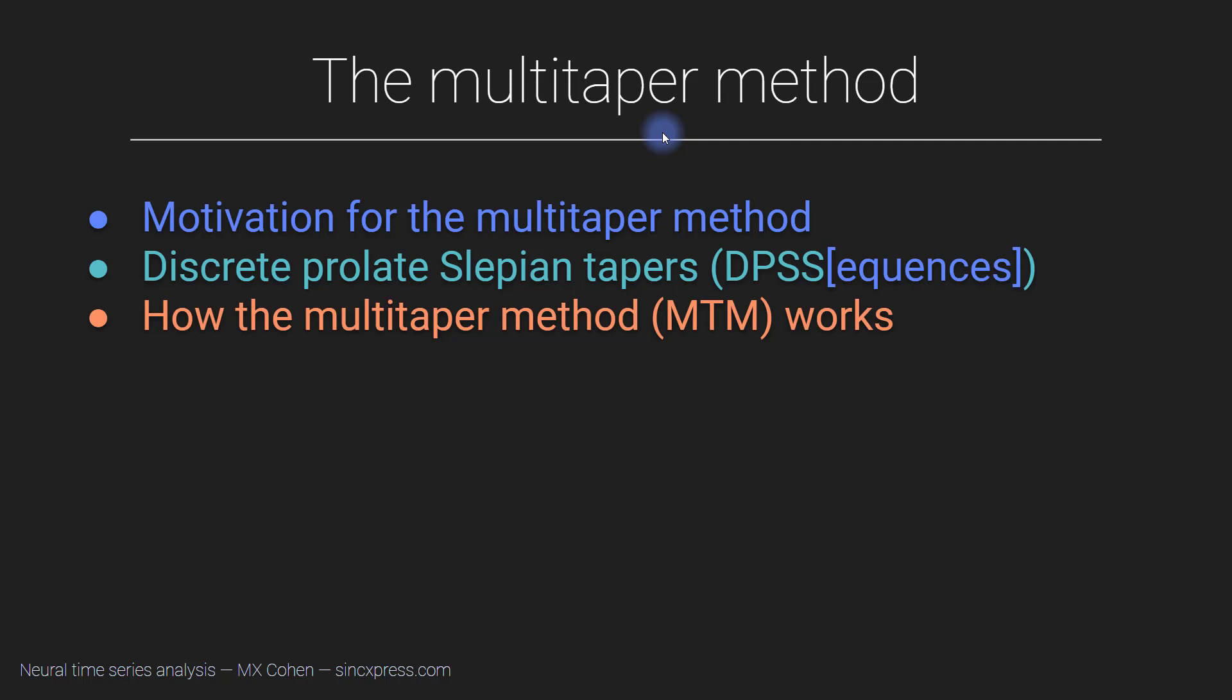And that is because whereas wavelet convolution, filter Hilbert, and short time Fourier transform are generally all the same procedure, they have slightly different implications and mechanisms, but they're really similar to each other.